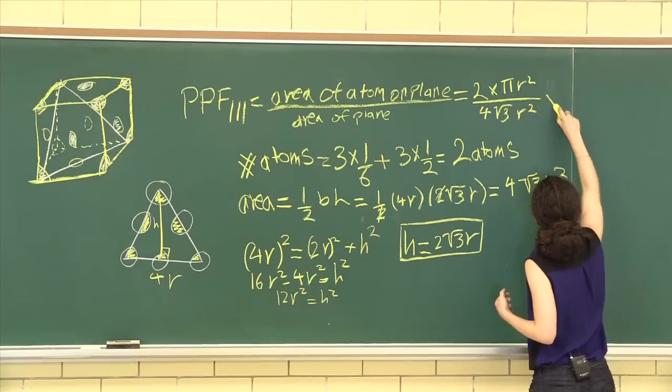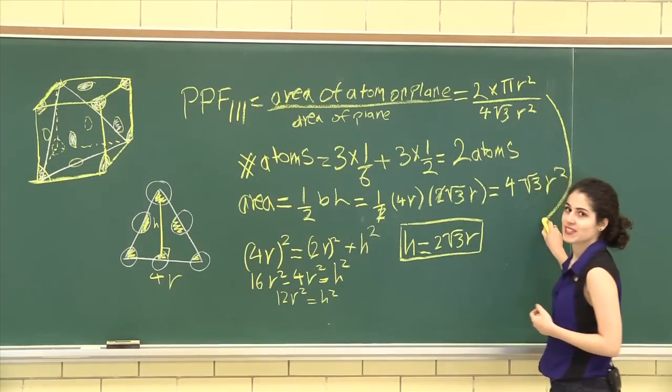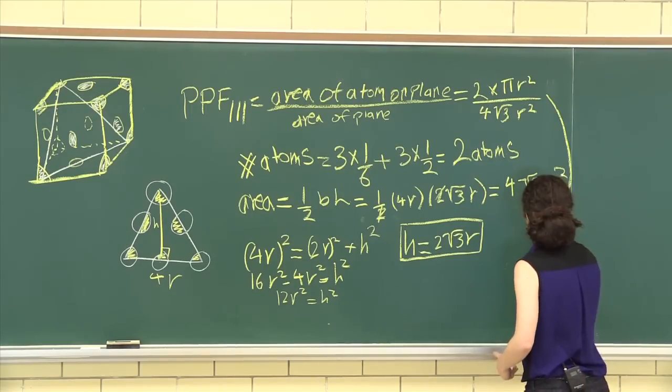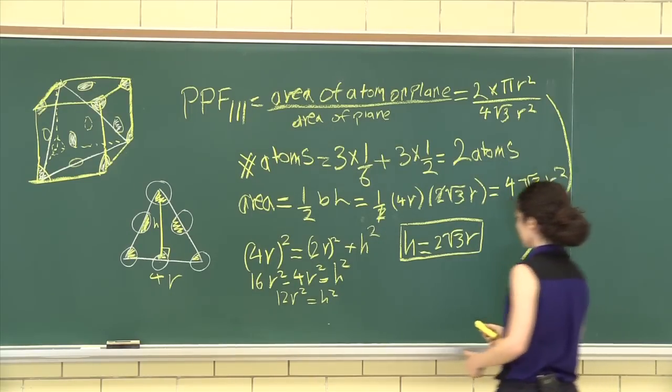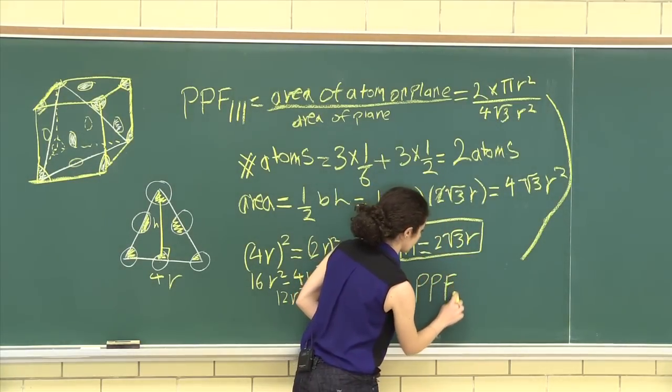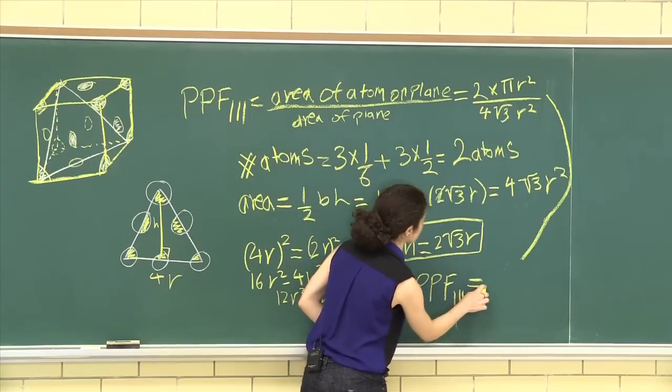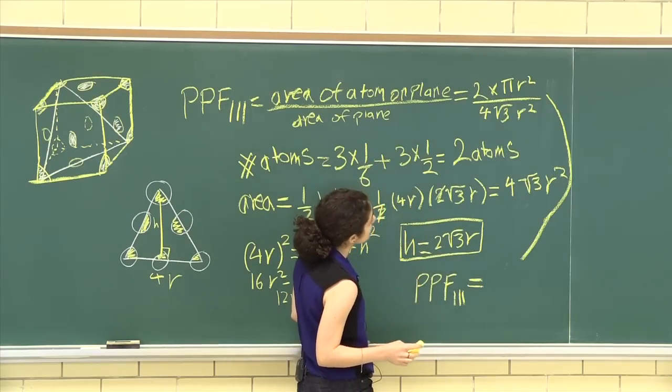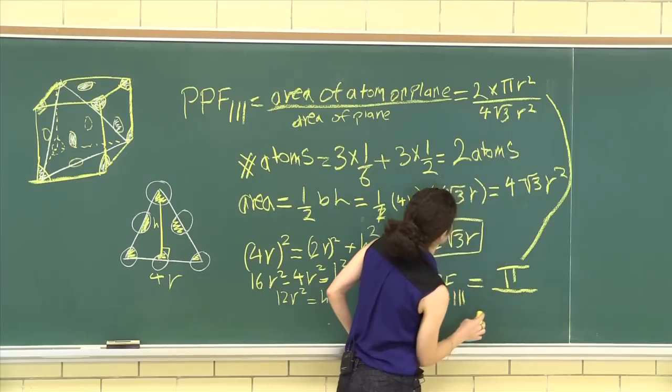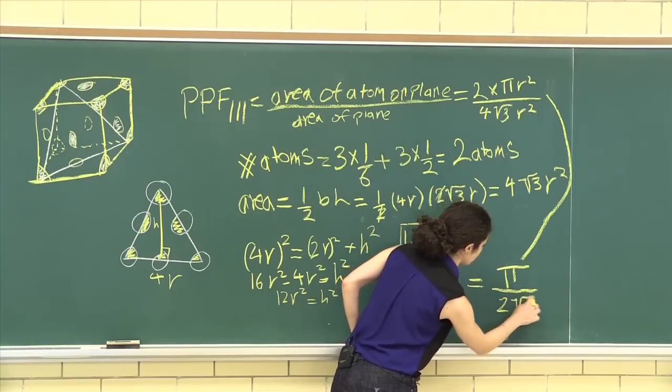Now if I were to continue that, because there's no space up there, the planar packing factor, let's continue it down here. The planar packing factor for the 1-1-1 plane is pi over 2 root 3.